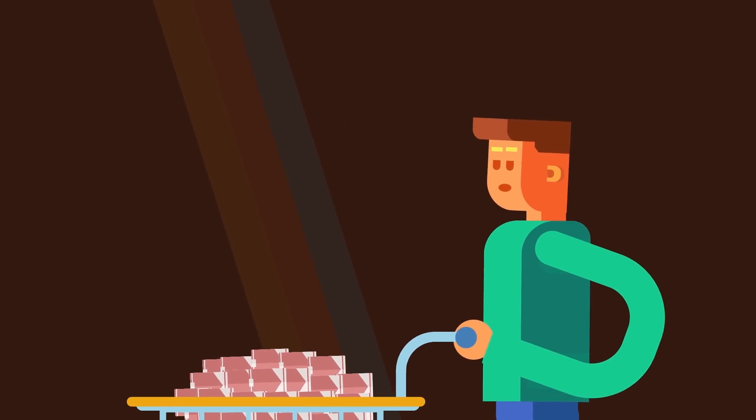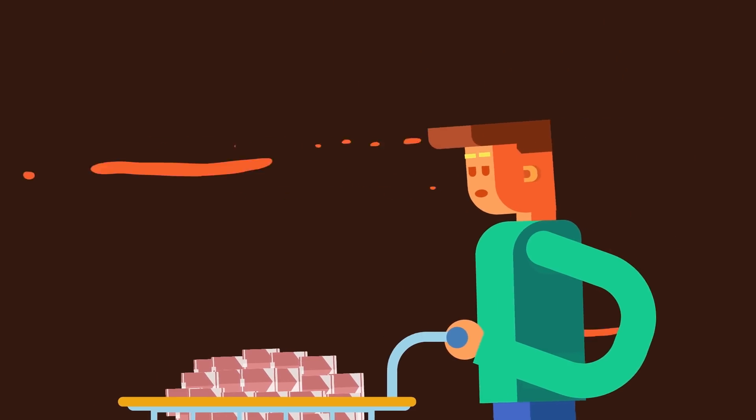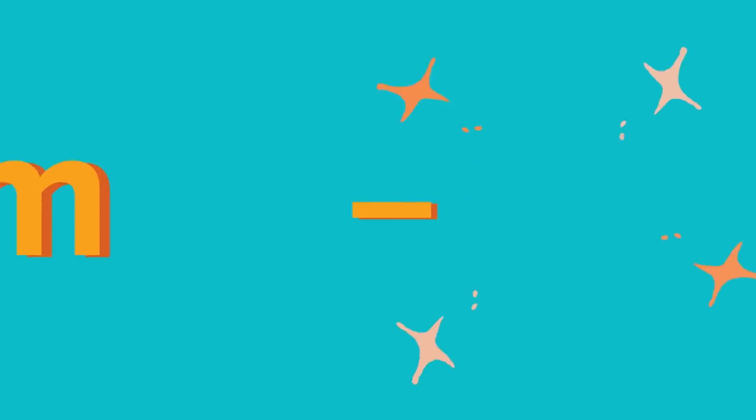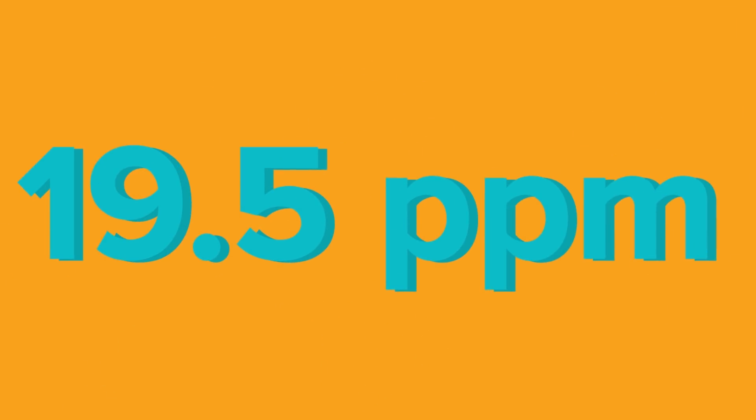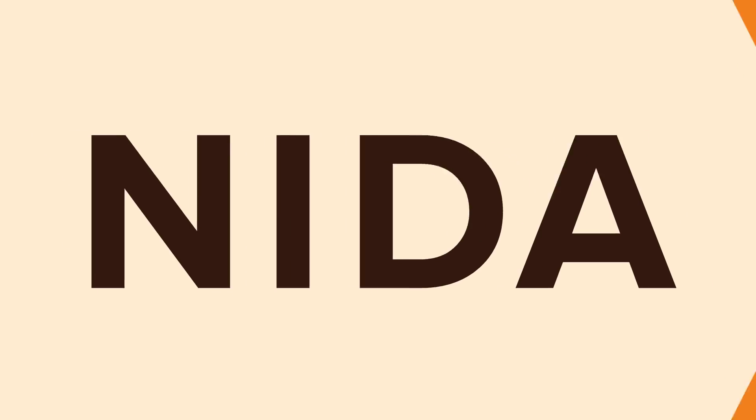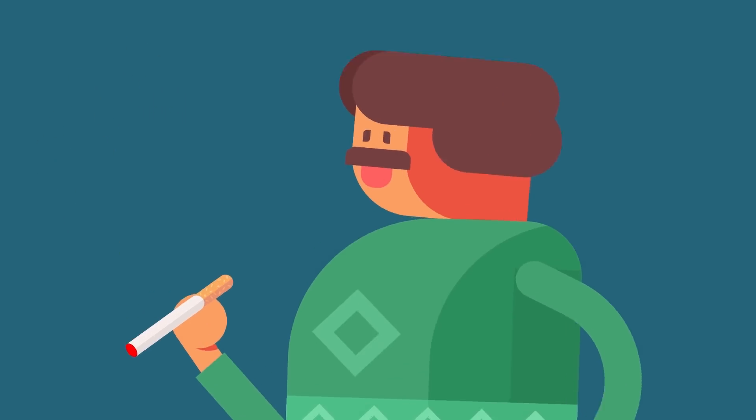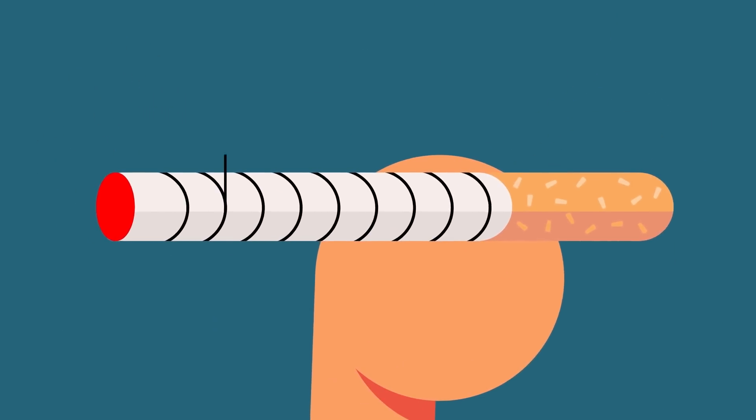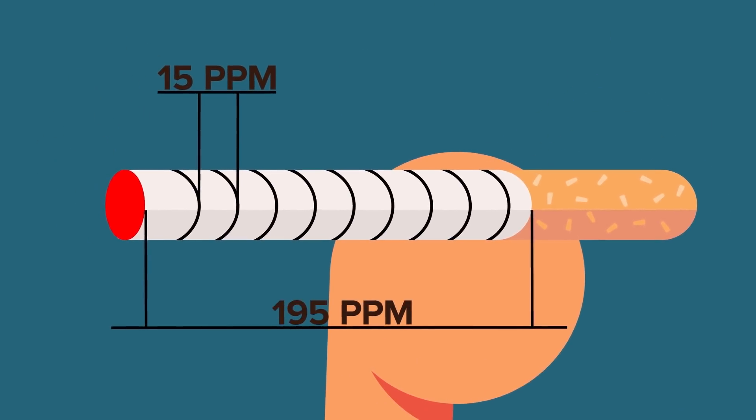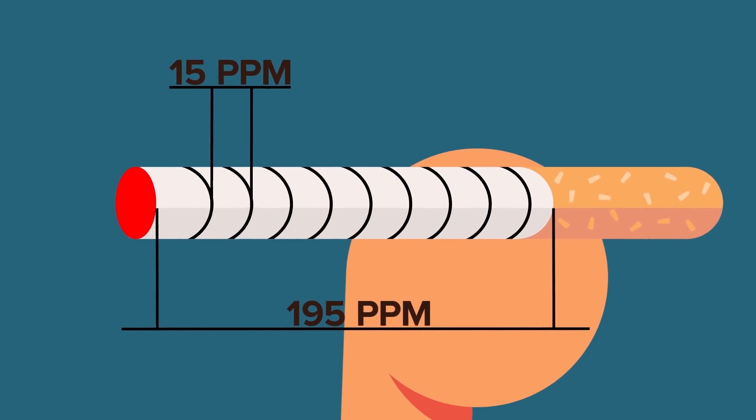There is even more bad news if you decide to smoke 1,000 cigarettes at the same time. One study indicates that the formaldehyde level in one puff of cigarette smoke ranges from 1.5 ppm to 19.5 ppm. If we follow the National Institute on Drug Abuse's estimate that a typical smoker will take 10 puffs on a cigarette, we can calculate that your formaldehyde exposure will be about 15 ppm to 195 ppm per cigarette.